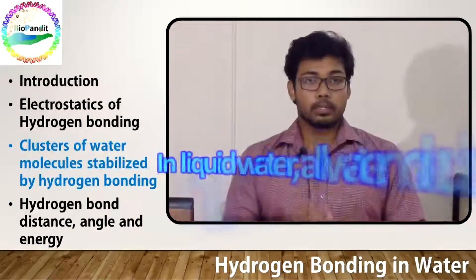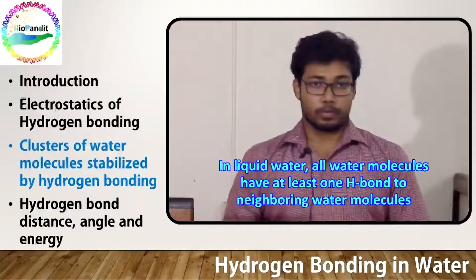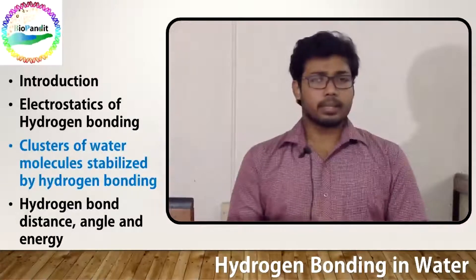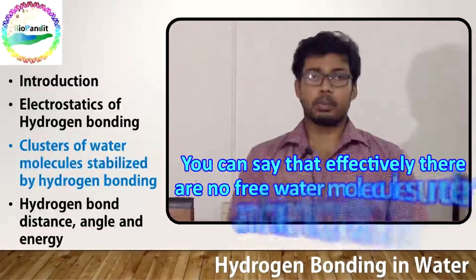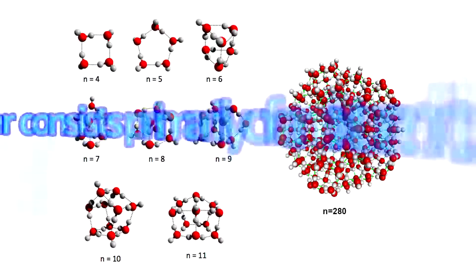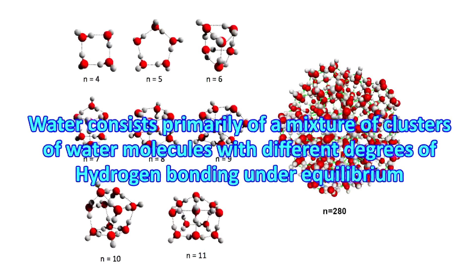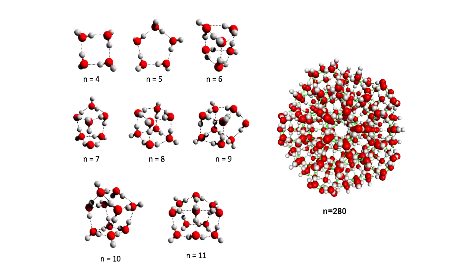In liquid water, all water molecules have at least one hydrogen bond through neighboring water molecules. You can say that effectively there are no free water molecules under ambient conditions. Water consists primarily of a mixture of clusters of water molecules with different degrees of hydrogen bonding in an equilibrium. Take a look here — these are equilibrium water clusters sustained by hydrogen bonds. We have shown you some clusters ranging from 4 water molecules to 280 water molecules.